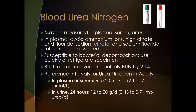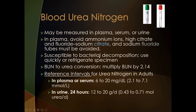BUN can be measured in plasma, serum, or urine. Plasma requires the lithium heparin (green top) tube; serum uses a red top tube; urine uses a urine cup. In plasma, you must avoid ammonium ions, high citrate, and fluoride content — so sodium citrate (light blue top) and sodium fluoride (gray top) should be avoided. BUN is susceptible to bacterial decomposition, so specimens must be used quickly or refrigerated, especially urine.